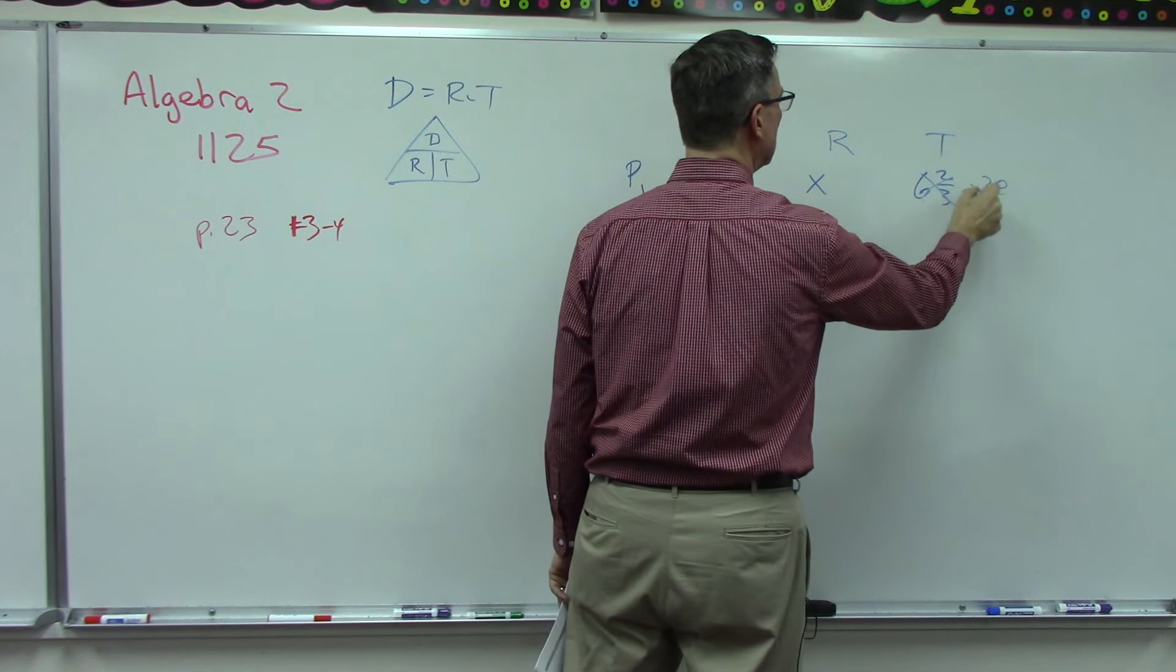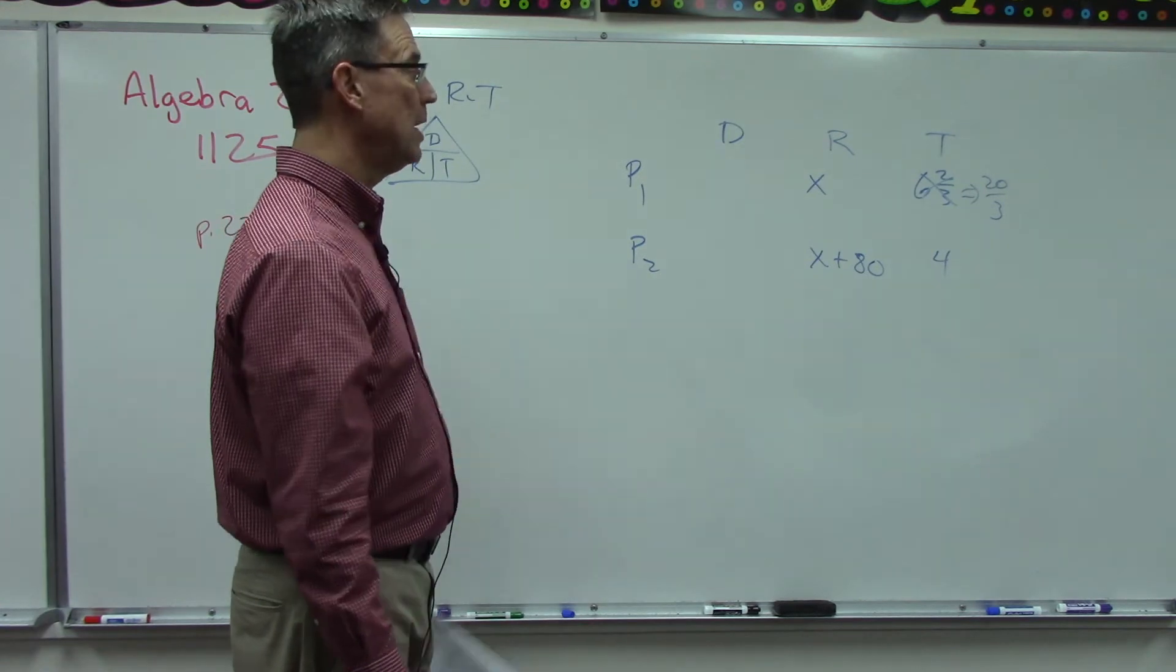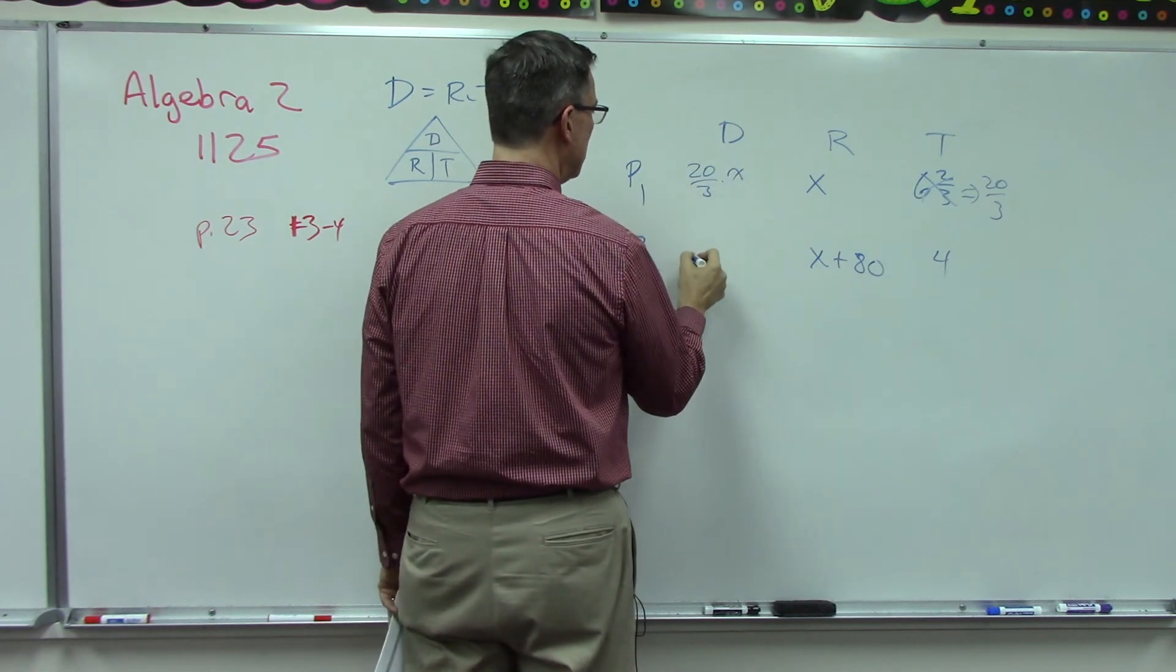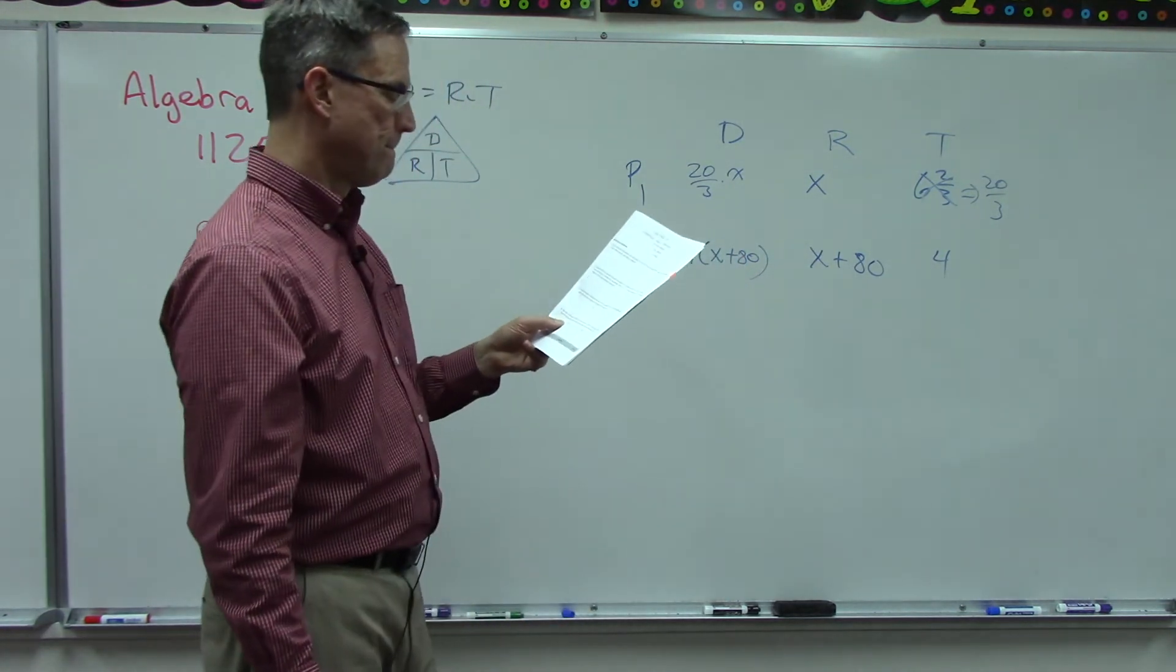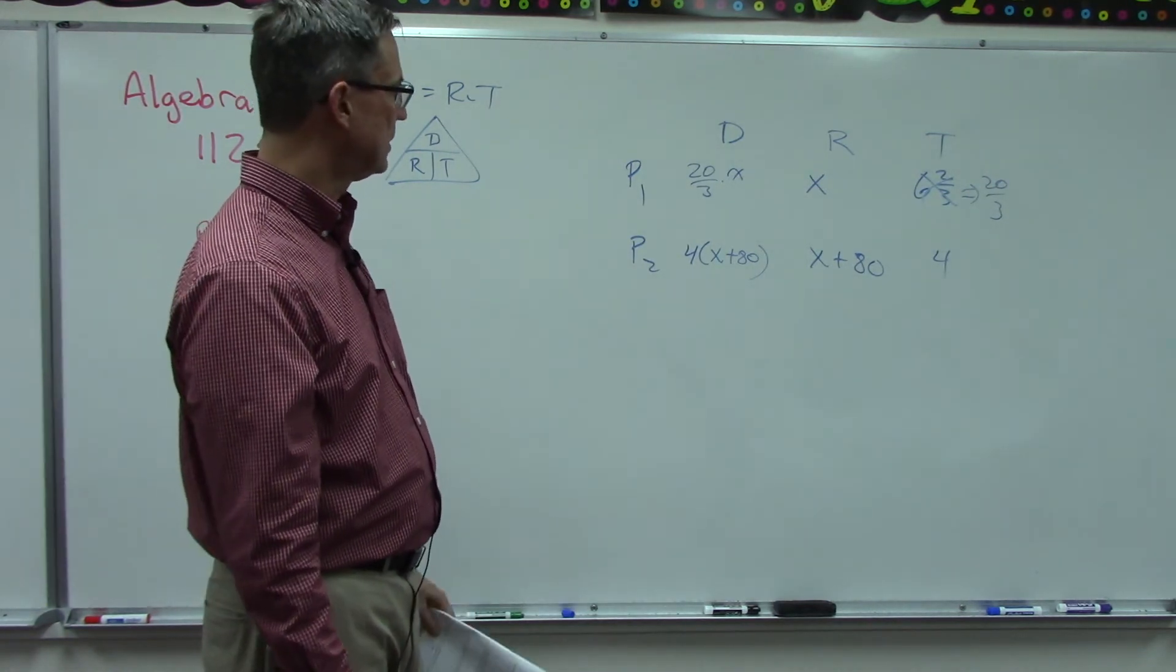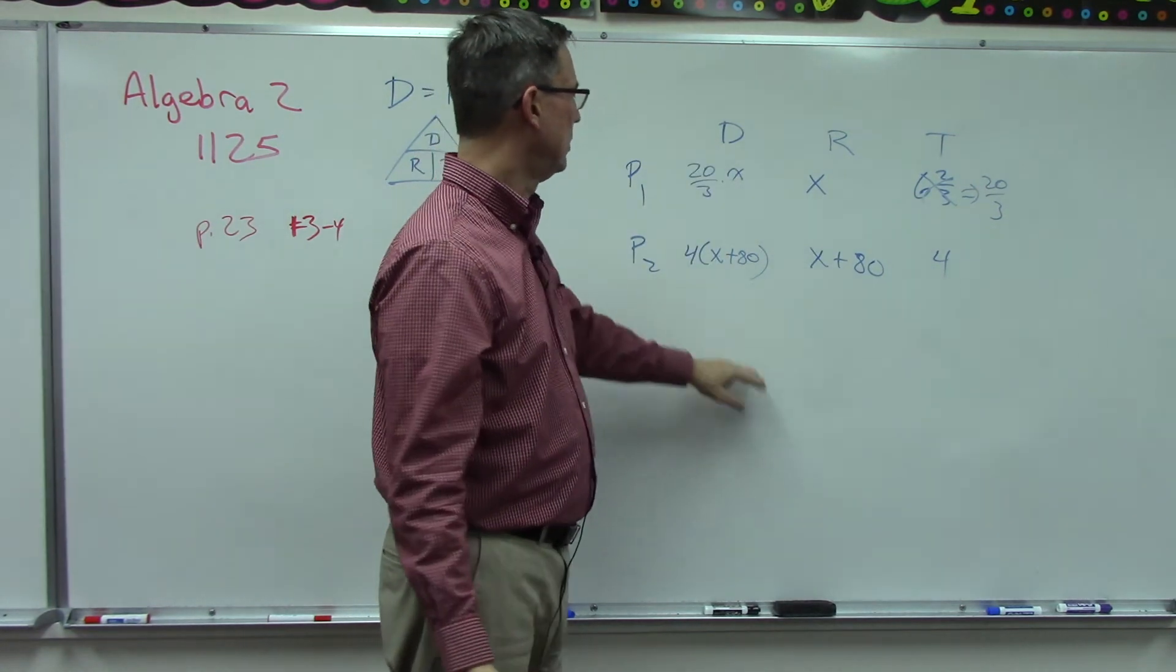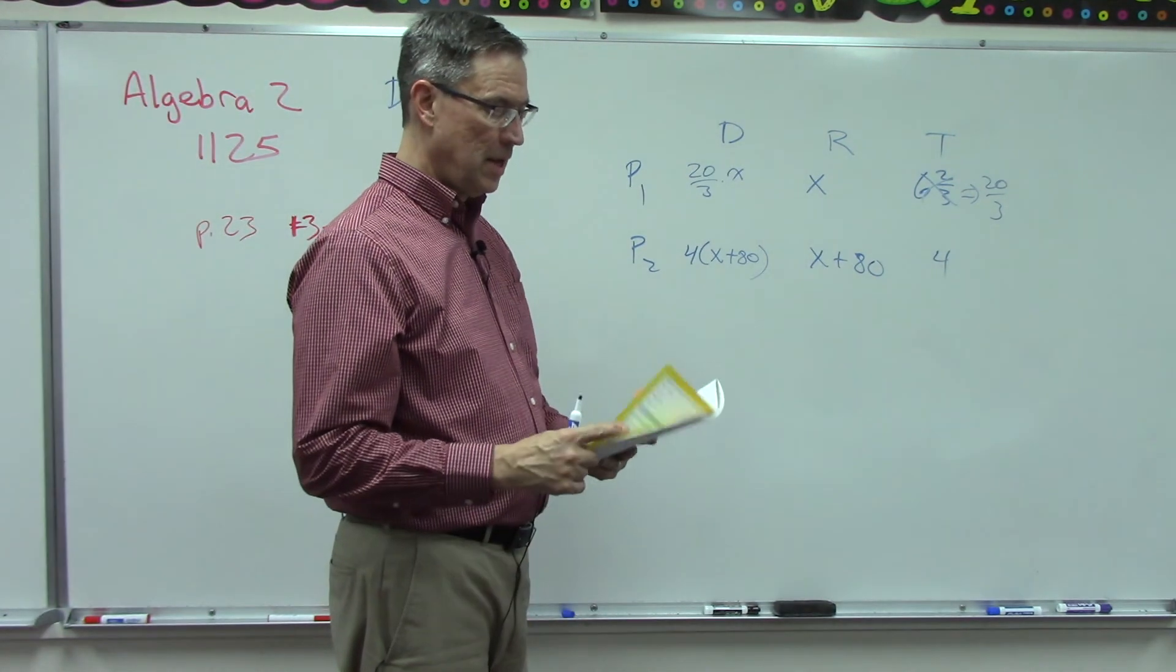What is distance? Distance is rate times time, so we can say 20 over 3 times x, and then this one is going to be 4 times the quantity x plus 80. What we know is that it is the same distance. I don't think I need to go any further here. We have two equations now that represent the distance of each plane, and now we can set these equal to each other. It's just a matter of solving for x.